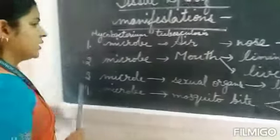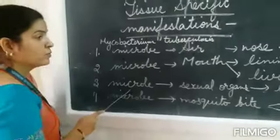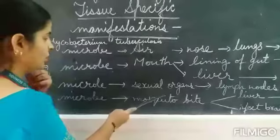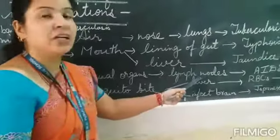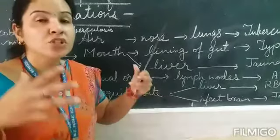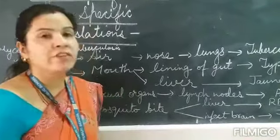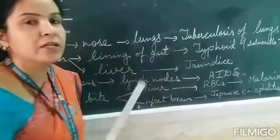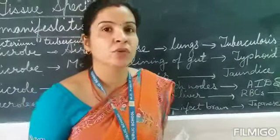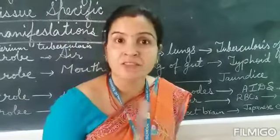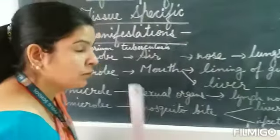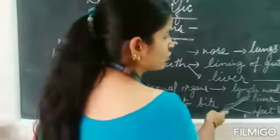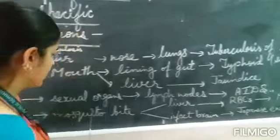Now, if any microbe enters into the sexual organs, it will infect the lymph nodes — all the lymph nodes in our body. And what disease does it cause? It causes AIDS. We know that AIDS is caused by HIV — the Human Immunodeficiency Virus. The Human Immunodeficiency Virus, which is transmitted through sexual contact, affects the lymph nodes.